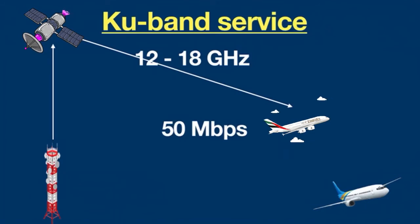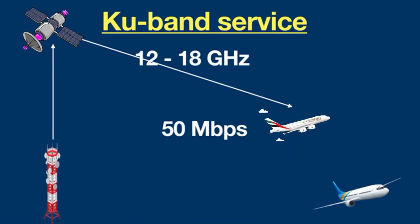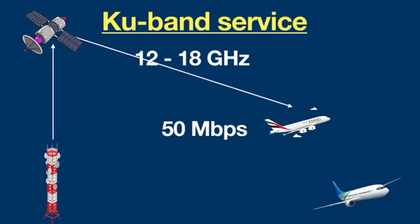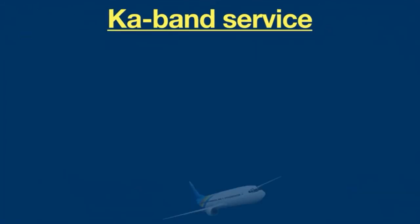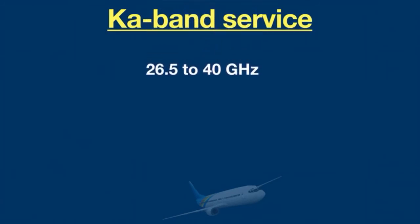Still, 50 Mbps is sufficient for Facebook or YouTube live streaming. On the other hand, the ATG outlook looks unfavorable by comparison. This is where the third service comes into play: Ka-band service. Ka-band uses frequencies from 26.5 to 40 gigahertz.